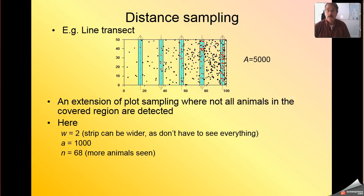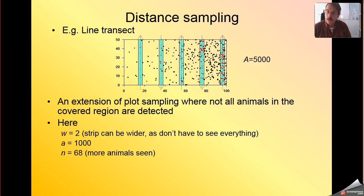In addition to that, we also see more animals than we saw previously. Previously, when we had done plot sampling on this area, we had seen 36 individuals in our covered region. We now see 68 individuals in our covered region. Note — I'll leave this for you to ponder — the number of animals we see now is not quite double the number we saw previously, even though our strip widths are exactly doubled. I wonder why that might be.